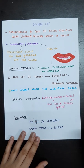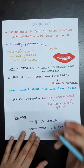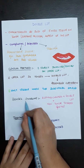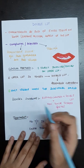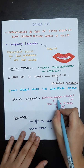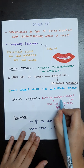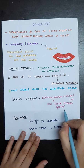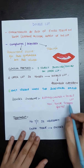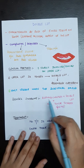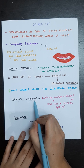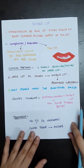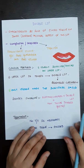Double lip is important because it is associated with a syndrome known as Ascher syndrome. In this syndrome, blepharochalasis will be present, double lip will be present, and non-toxic thyroid goiter. The combination of these three things constitutes Ascher syndrome. That is why we should know about double lip.